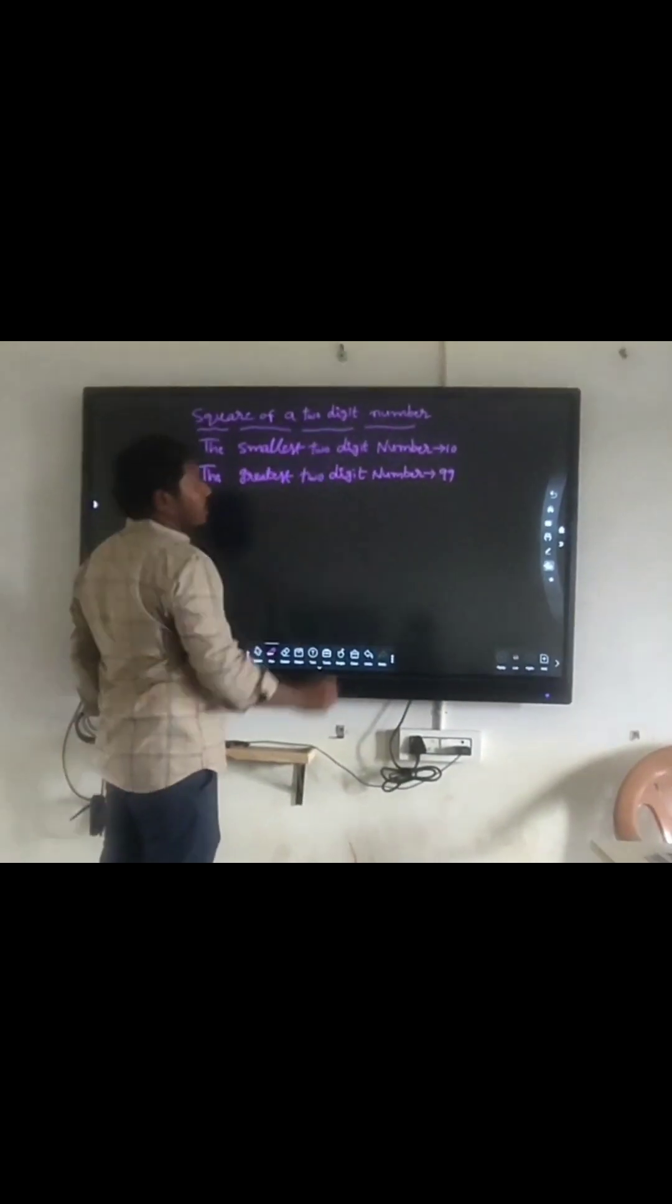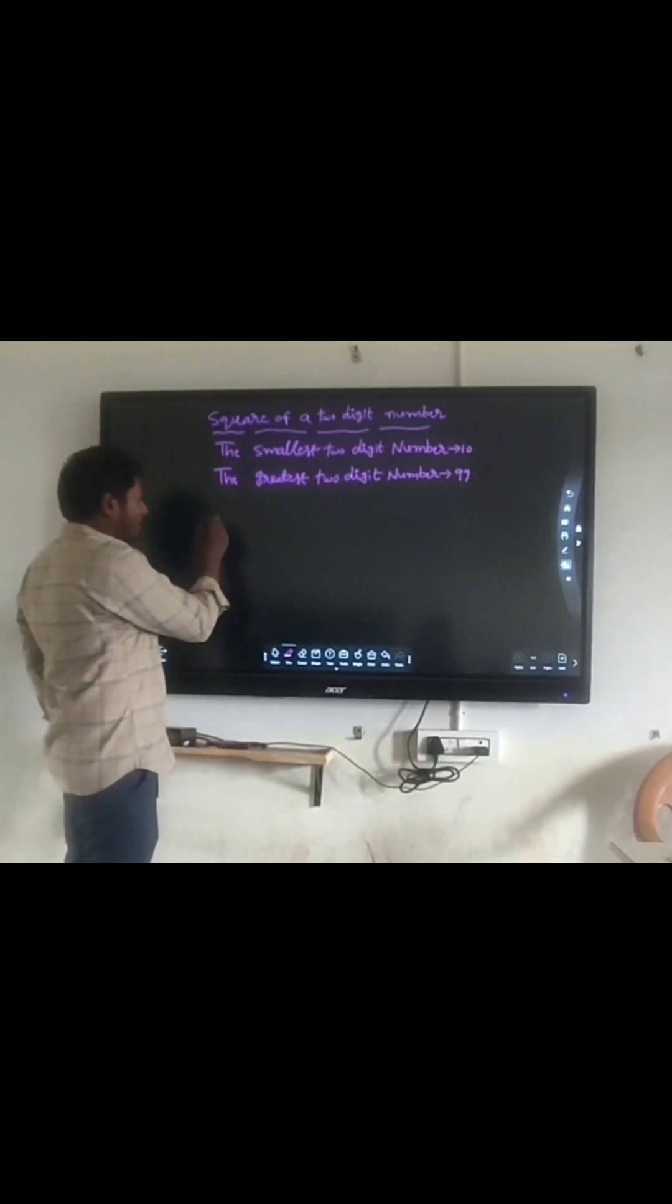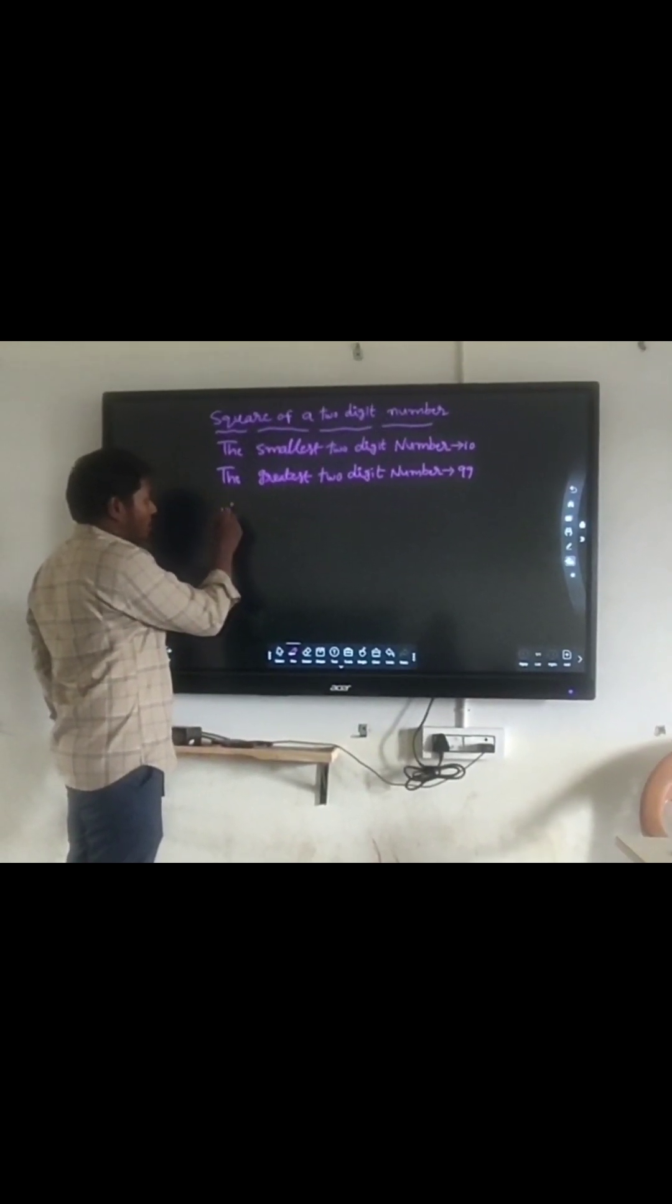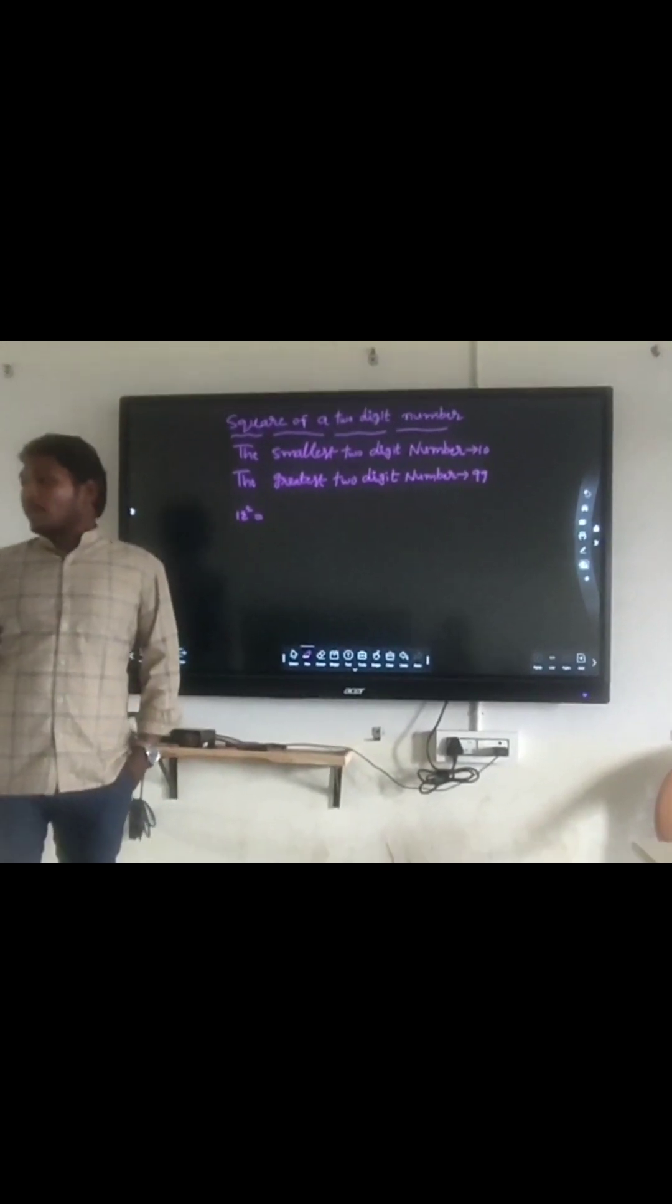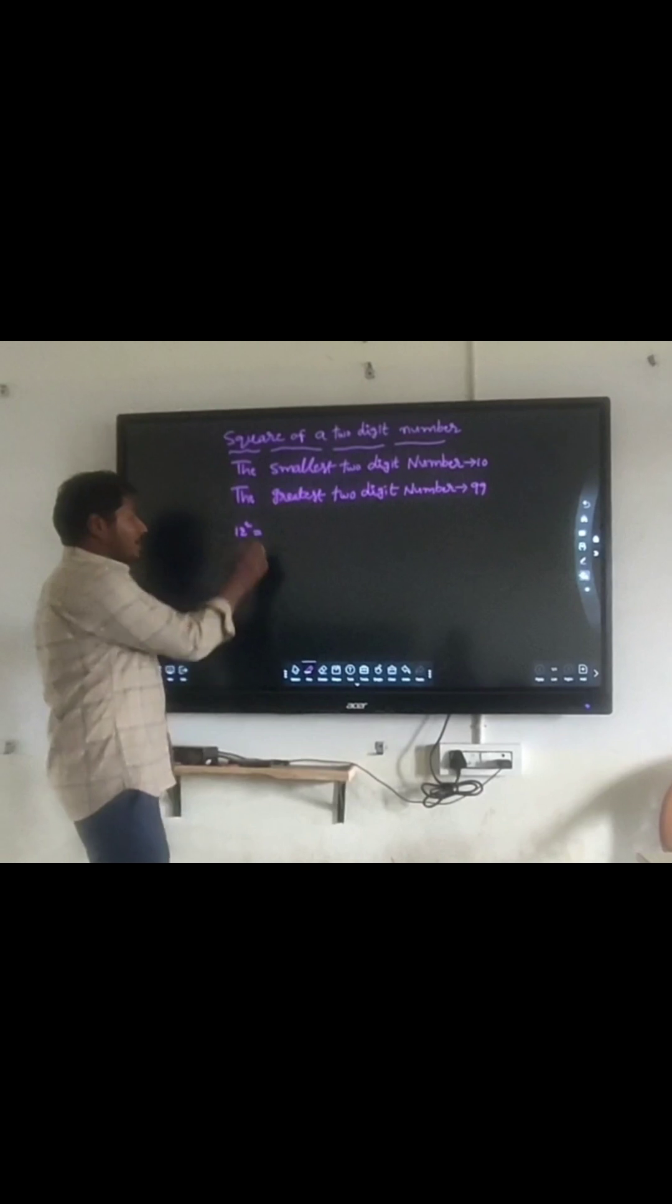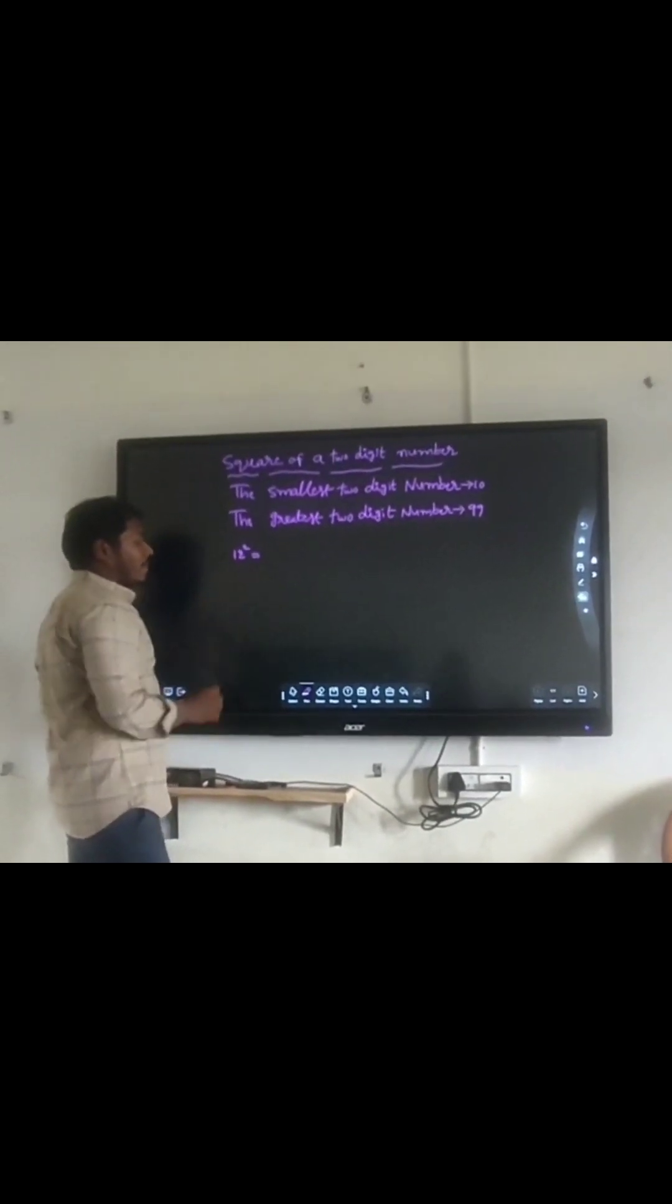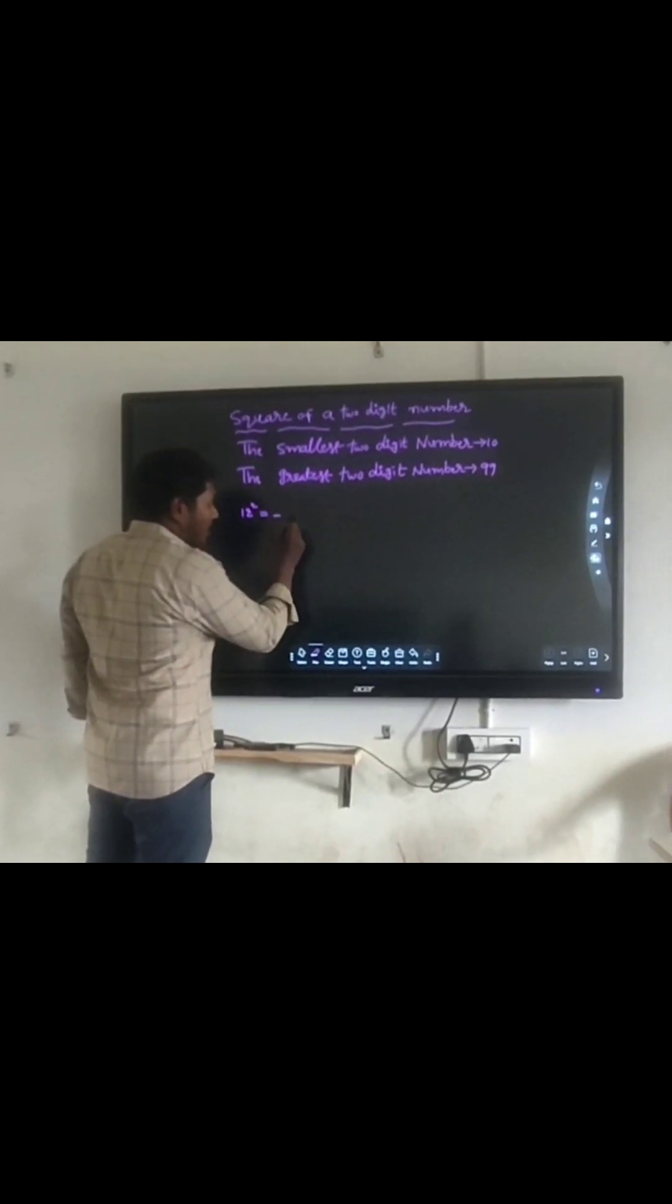We are going to learn square of a 2-digit number, very simple and very fast. Let's take 12 square. The general process is 12 into 12, so 12 squared is 144. What we can learn is to do this using my trick very easily. First of all, divide the answer into 3 parts.